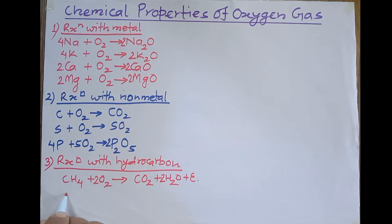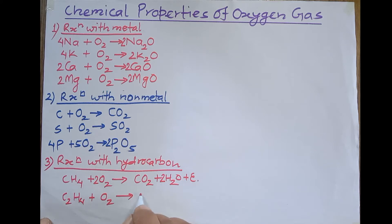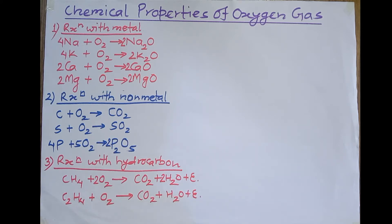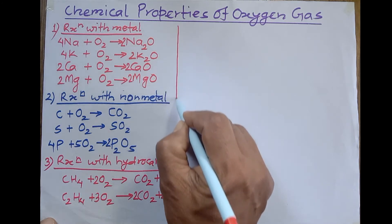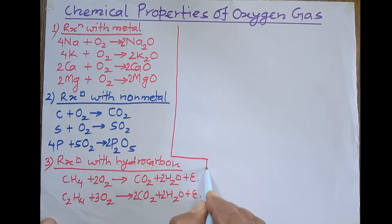Another hydrocarbon: ethene (C₂H₄), also called ethylene, when it reacts with oxygen, the products are the same — carbon dioxide, water, and energy. A lot of energy is produced in this process. To balance: placing 2 before CO₂ and 2 before H₂O, then 3 molecules of O₂ on the left gives 6 oxygen atoms on both sides. This is the balanced chemical equation for the reaction with hydrocarbons.